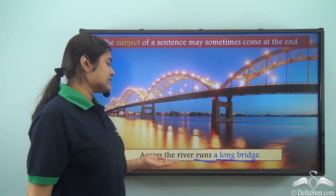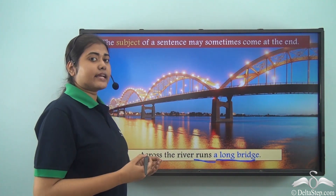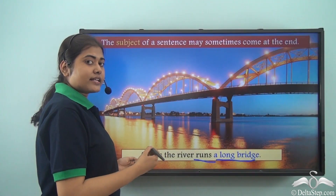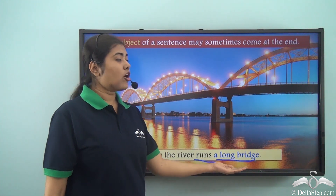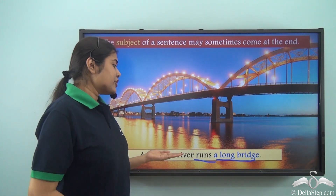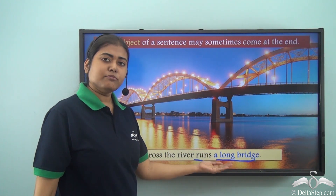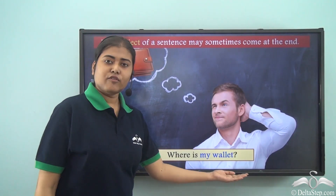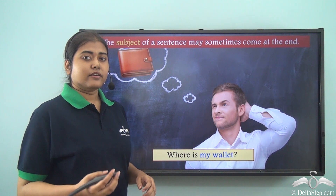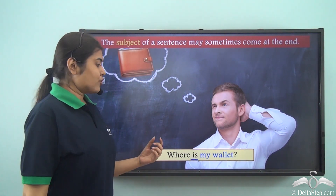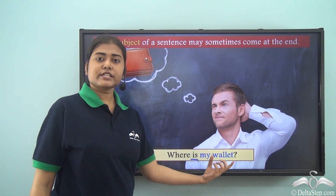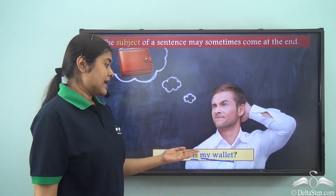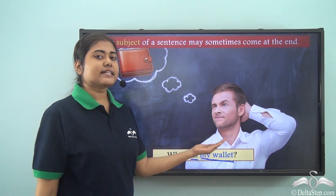We could have said 'A long bridge runs across the river,' where the subject would come at the beginning. But here we have constructed it differently: 'Across the river runs a long bridge.' Often in story books or literature you will see sentences like this where the subject comes at the end and the verb comes before it. Similarly, 'Where is my wallet?' — the verb is 'is,' and the subject 'my wallet' is placed right at the end.